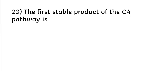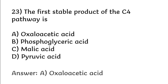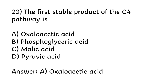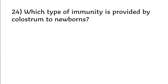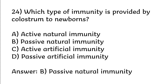The first stable product of the C4 pathway is: oxaloacetic acid, phosphoglyceric acid, malic acid, pyruvic acid. Correct answer is option A: oxaloacetic acid. Which type of immunity is provided by colostrum to newborns? Options: active natural immunity, passive natural immunity, active artificial immunity, passive artificial immunity. Correct answer is option B: passive natural immunity.